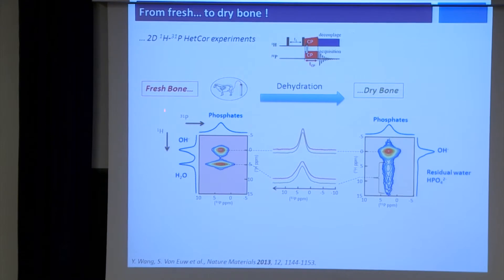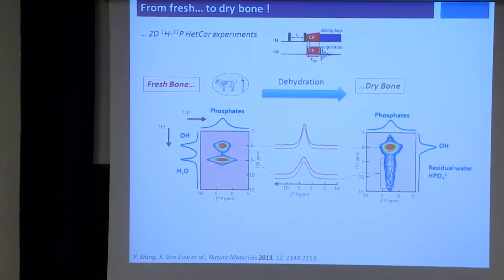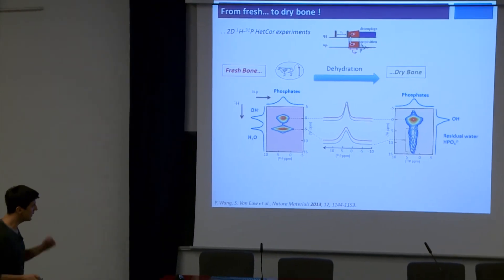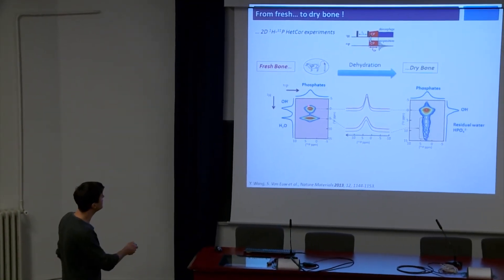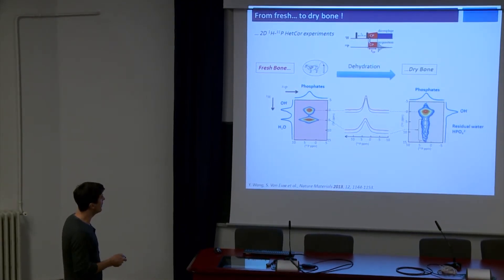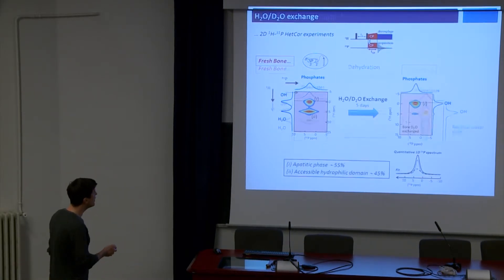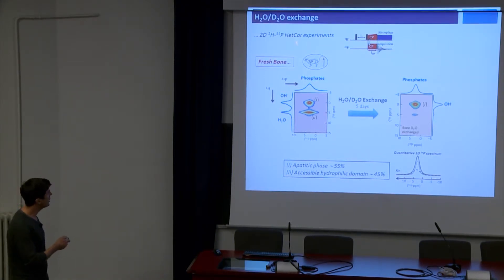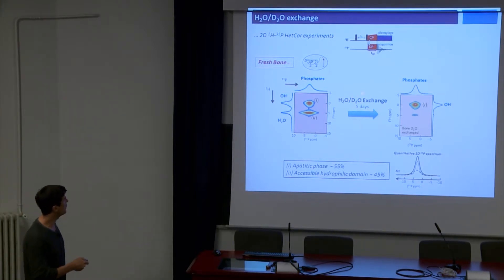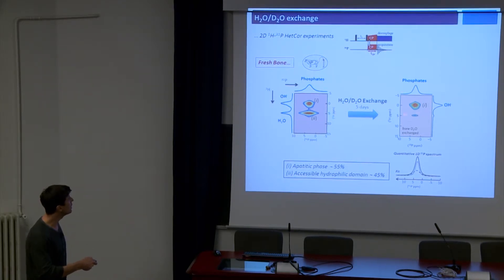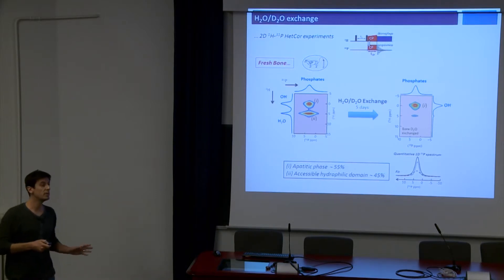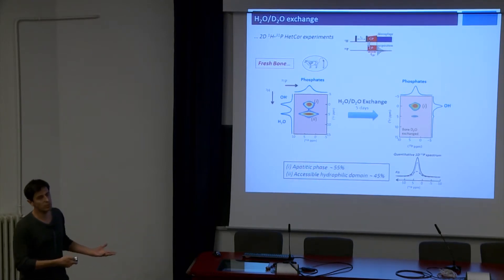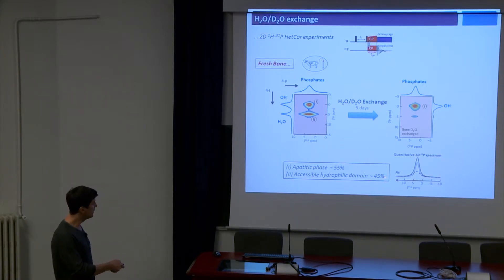We can prove these are water molecules, because we can follow the dehydration of the sample: if we dehydrate, we see the disappearance of that resonance, and then we reveal some hydrogen phosphate groups. The phosphates in the apatitic environment are not modified upon dehydration. We can also show that the water molecules are in an accessible environment by doing an exchange between water and deuterated water: after a certain time, you remove the peak corresponding to the water molecules, and there is no modification concerning the phosphate in the apatitic environment. So we are able to reveal two different environments: the apatitic phase and an accessible hydrophilic domain. We can also quantify this domain — it is around 50-50.